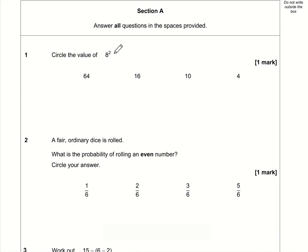The question says circle the value of eight to the power of two, eight squared. So what that means is eight multiplied by eight, and eight times eight is 64 which is the first answer.